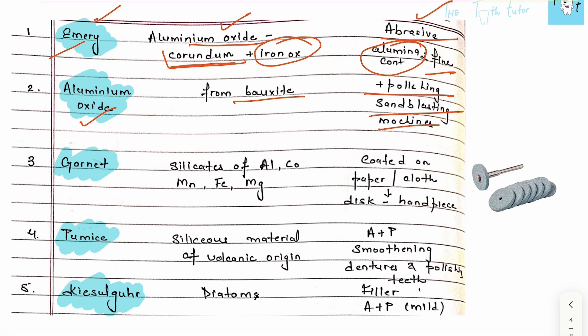Sandblasting machines are used for micro etching - creating roughness on the surface that makes binding of any restorative material easier. Then we have garnet, made up of silicates of aluminum, cobalt, manganese, iron, and magnesium - a mixture of many silicates. It's coated on discs used for polishing with a handpiece. Then pumice, of volcanic origin, used for smoothing dentures and polishing teeth in prosthodontics and periodontics.